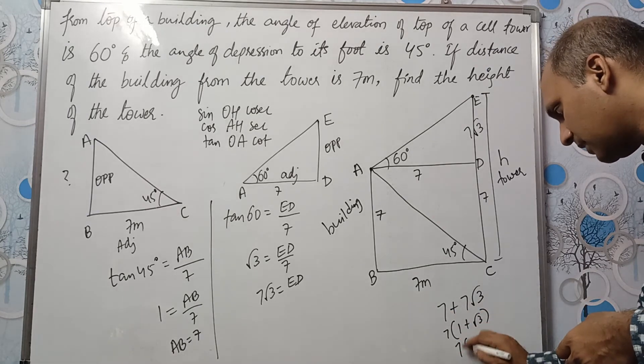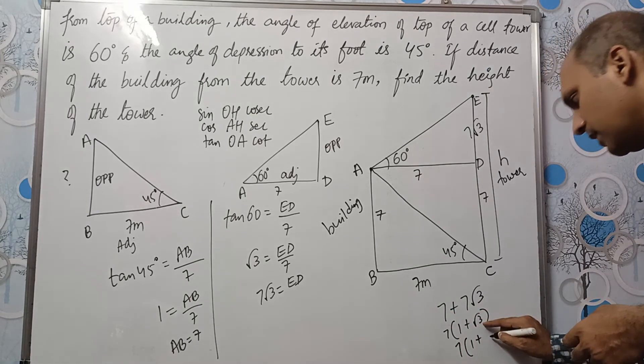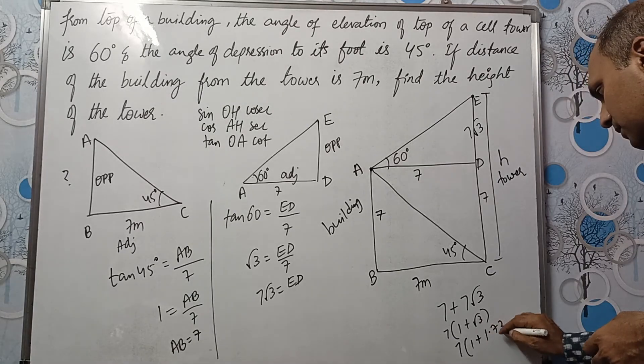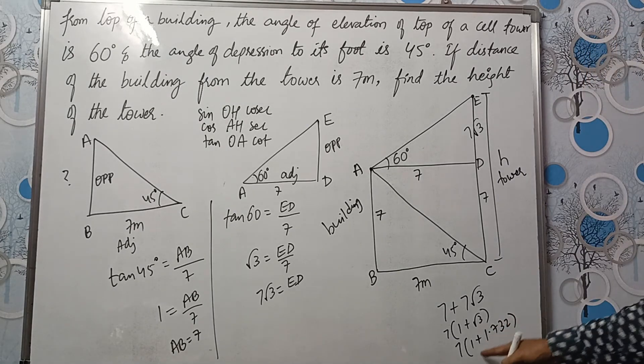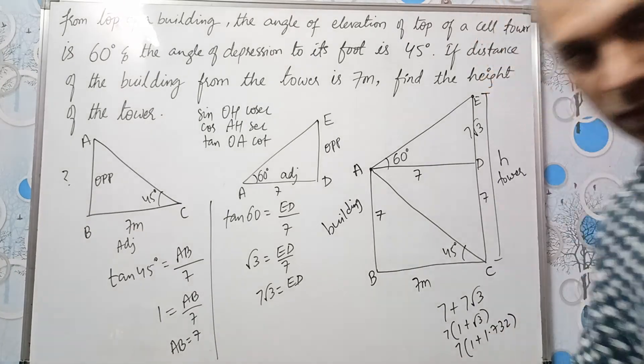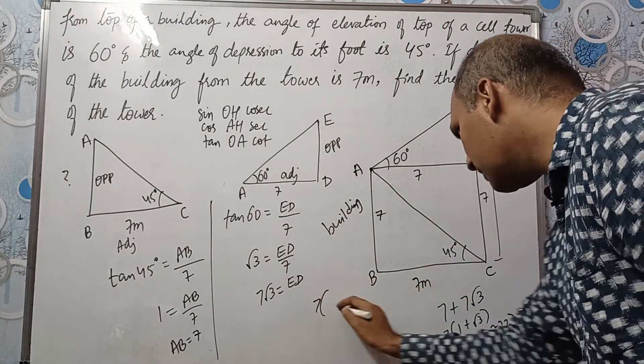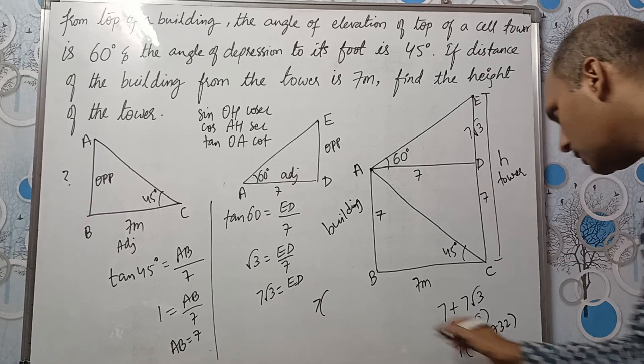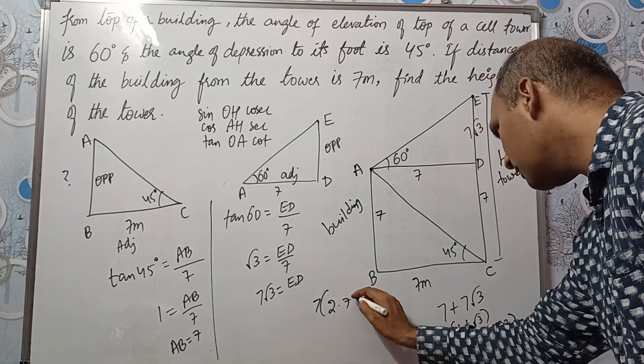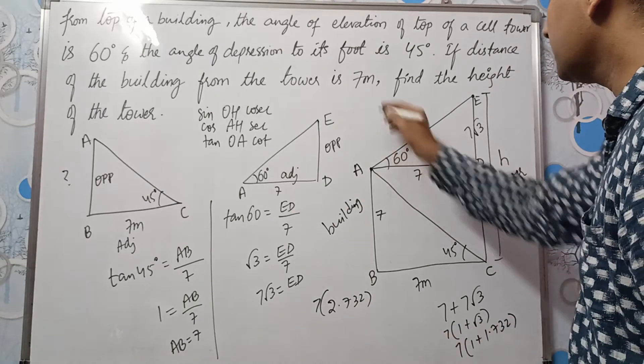So it is 7, 1 plus. We know what is the value of root 3? 1.732 approximately. Let me just check whether this is visible in the board or not. Yes. I will write it here now. This is 7. 1 plus 1 here will be 2.732. Now let us multiply this.